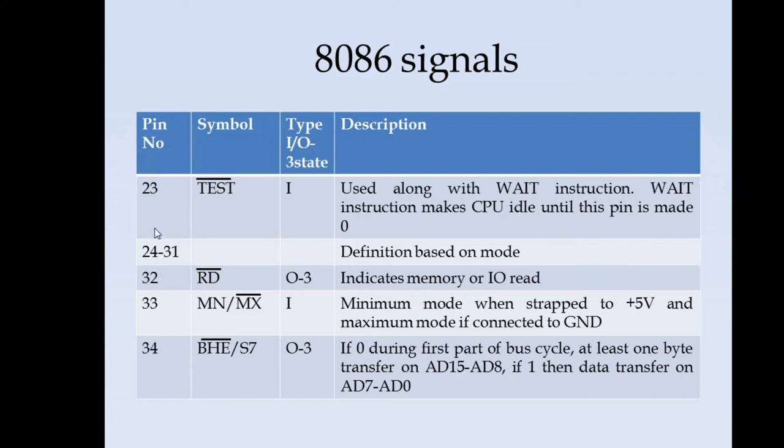Pin number 24 to 31 have different definitions based on whether it is minimum mode or maximum mode, which we will see later. Pin number 32 is active low read signal. It will act as an output or it will become tri-state. It indicates some memory or IO read operation has to be performed.